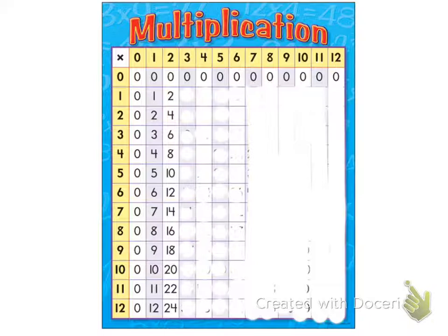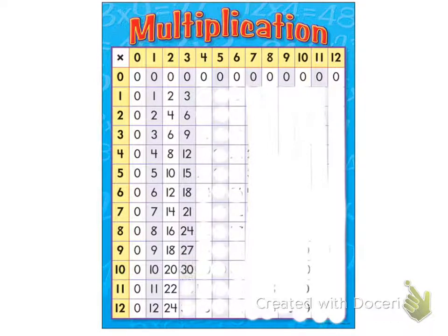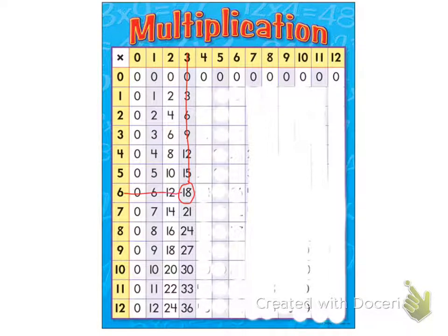Let's count by threes. We have three, six, nine, twelve, fifteen, eighteen, twenty-one, twenty-four, twenty-seven, thirty, thirty-three, thirty-six. What is the sixth multiple of three? We look at three and go down to the sixth multiple, which lines up with the sixth, and that is eighteen.